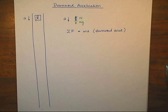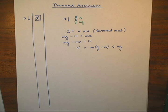Here's Newton's second law with a downward acceleration. The weight is in the direction of the acceleration, so it's positive. The normal force is in the opposite direction as the acceleration, so it's negative. The normal force is less than the weight.